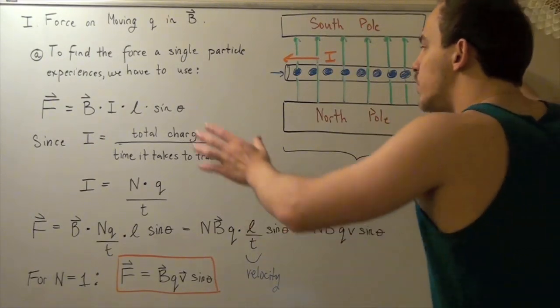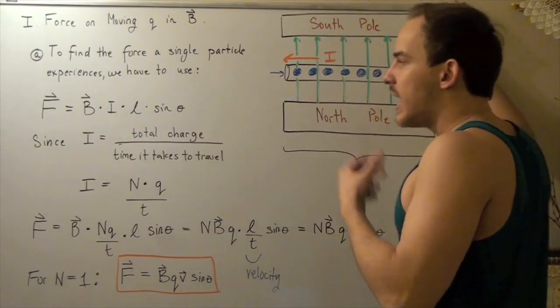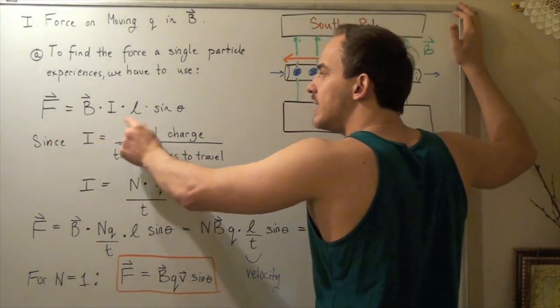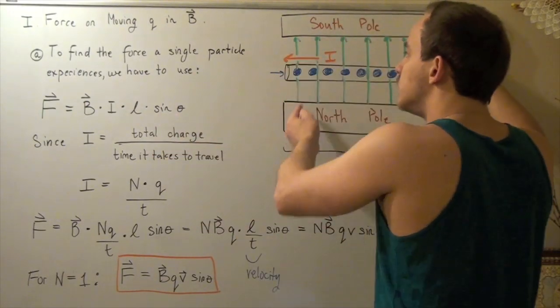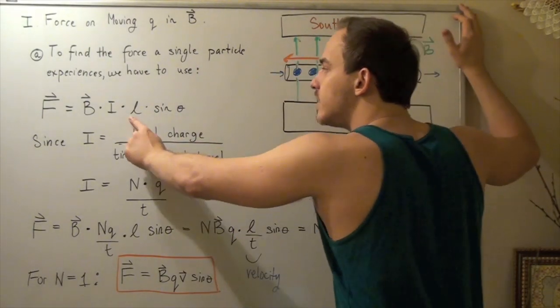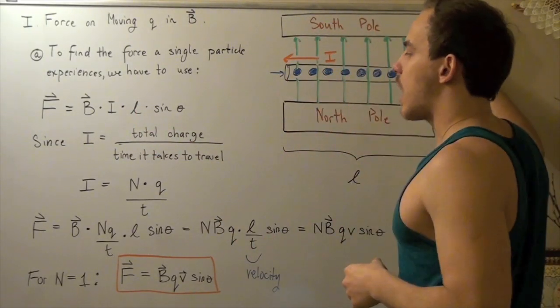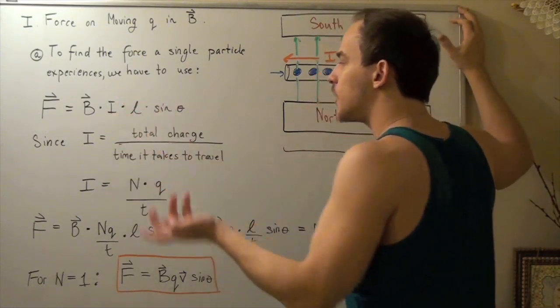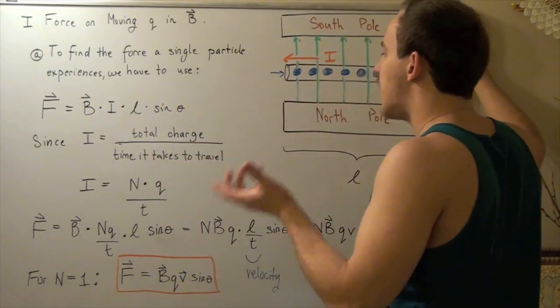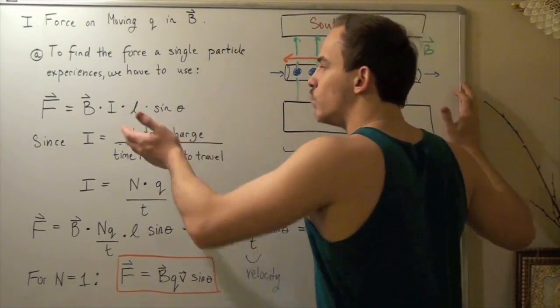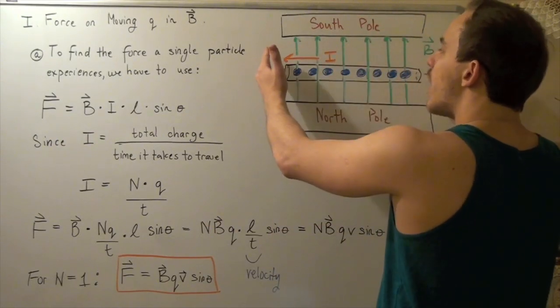Now, to find the formula, we have to look back at our formula for the entire current. The formula is force equals BIL times sine theta. Theta is the angle between our field lines and our current. L is the length of our wire that is exposed to our field. I is the current flowing through our wire. And B is simply the value of our magnetic field. And we plug the values in, we get the force that our entire wire feels.